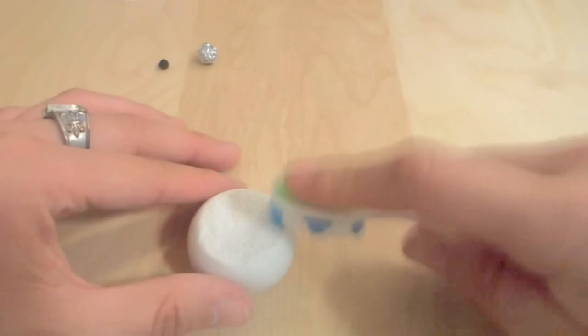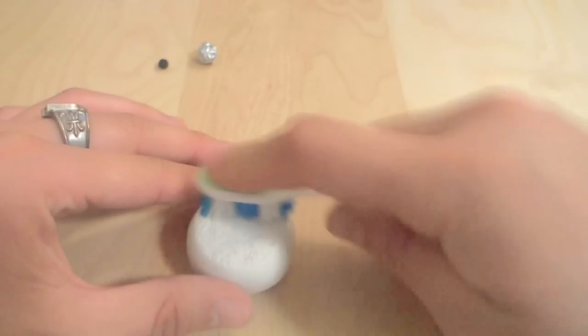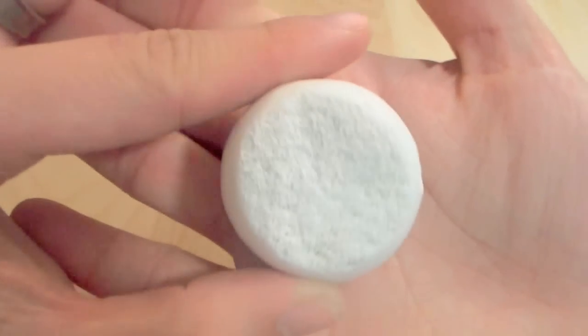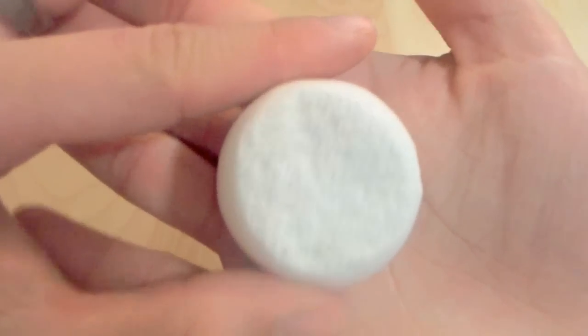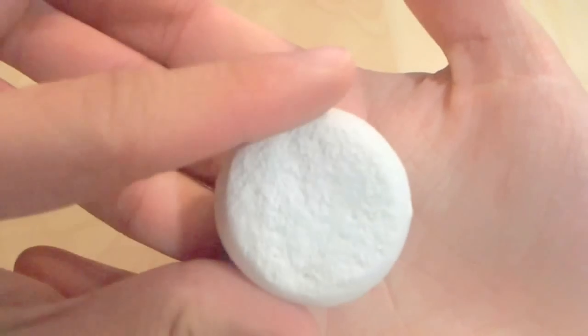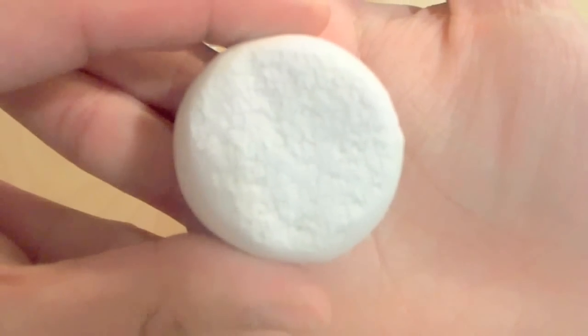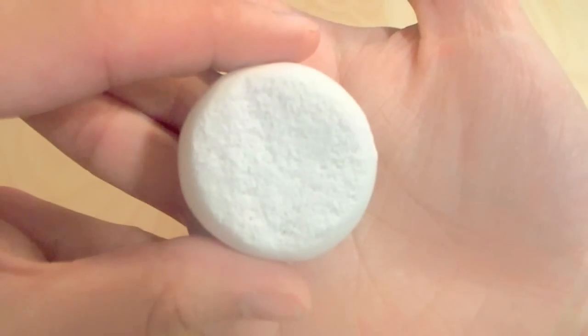And you can also use this for texturing cookies, baked goods such as breads or again onigiri. I personally like using this texture for breads or like pancakes or something. That's what that looks like.